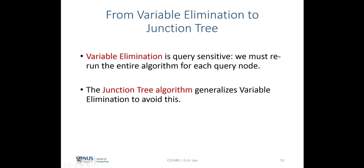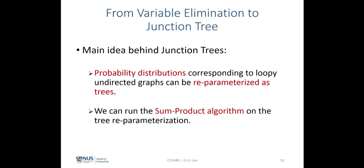So far we have looked at the variable elimination algorithm and we know that it's query sensitive. This means that we have to rerun the entire algorithm for each query node, and the complexity of the variable elimination algorithm depends on the choice of the elimination clique in the general graph. We now look at the junction tree algorithm that allows us to generalize variable elimination to avoid this.